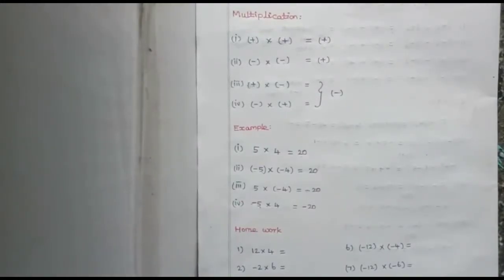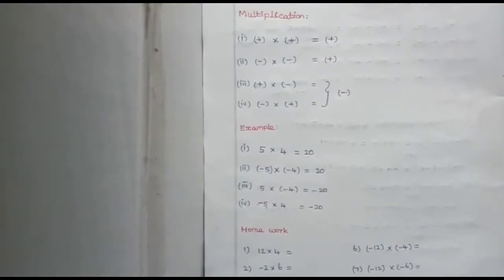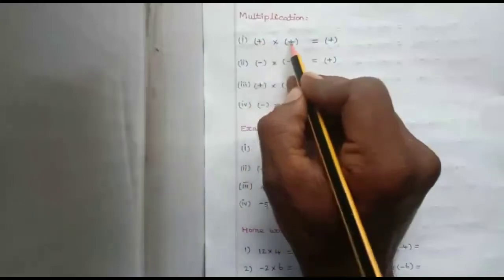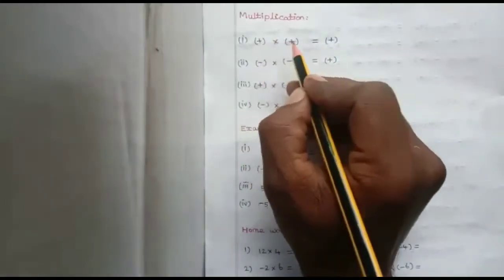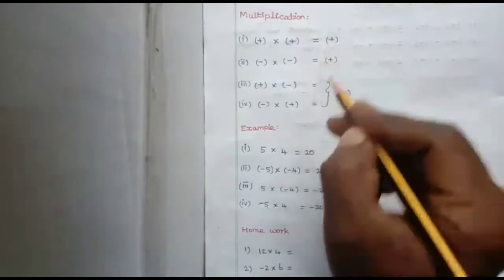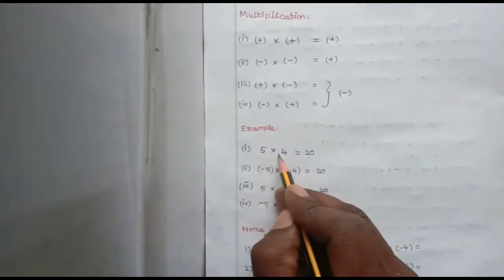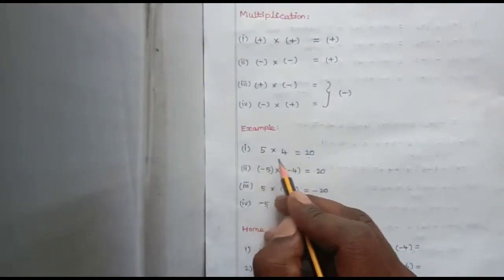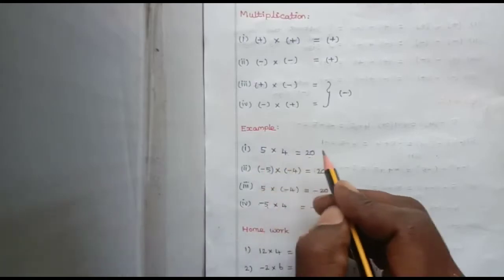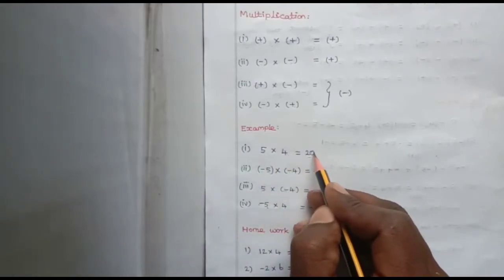Today we discuss multiplication on integers. There are four types. The first one: when we multiply two positive integers, we get a positive integer. For example, 5 into 4 — 5 is a positive integer, 4 is a positive integer, and 5 fours are 20. We get the answer 20, which is also a positive integer.